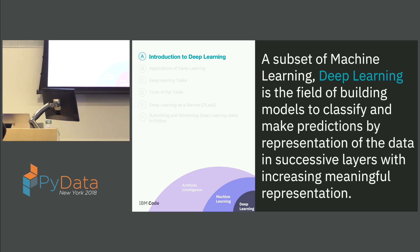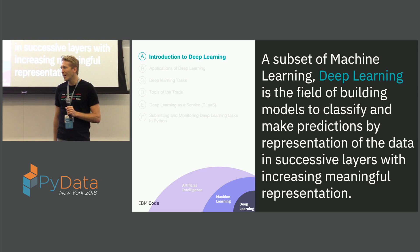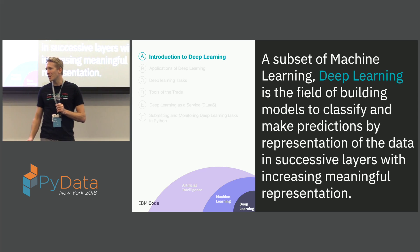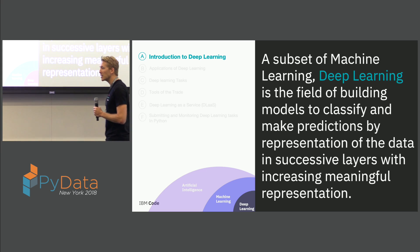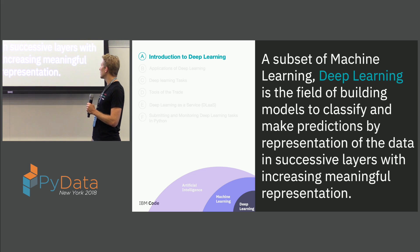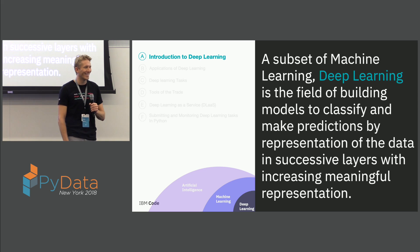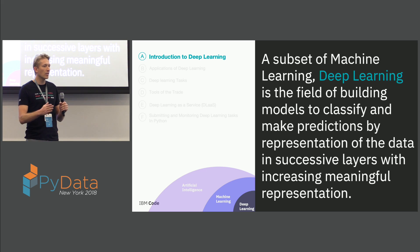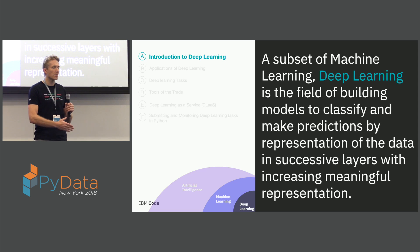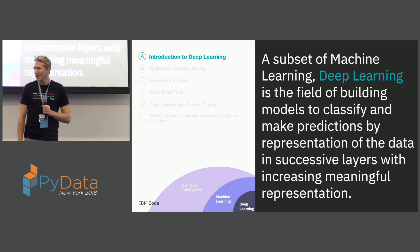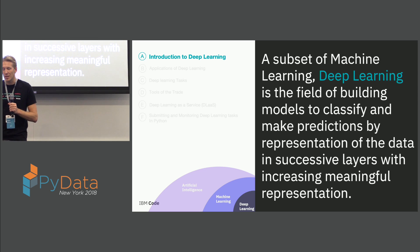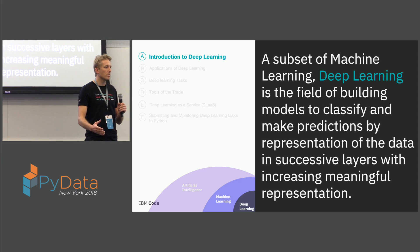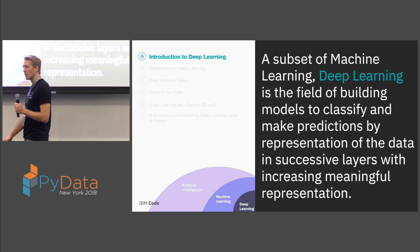For those of you not familiar with deep learning, deep learning is a subset of machine learning. It is a field of building models to classify and make predictions by representation of data in successive layers with increasingly meaningful representation. Training deep learning models means you're building a neural network — layers of basically matrices and performing transformations on those matrices. Deep learning sits within artificial intelligence and machine learning as a very specialized version, where you're building these complex layers of matrix transformations.